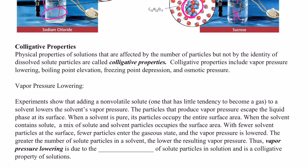Welcome back. Today we're going to talk about something called colligative properties — probably a term you haven't heard of before. Colligative properties are simply physical properties of a solution, and they are affected by the number of particles, not the type of particles.